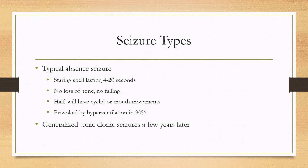In 80 to 90% of people you can provoke these seizures with hyperventilating. Sometimes a few years after the onset of the disease, you may also see generalized tonic-clonic seizures, though this is rarer.